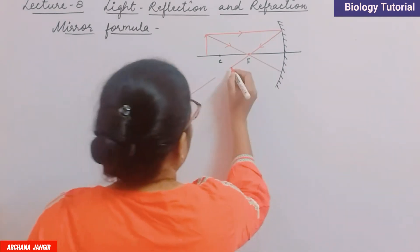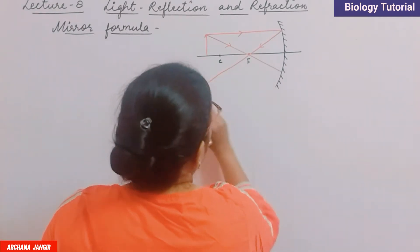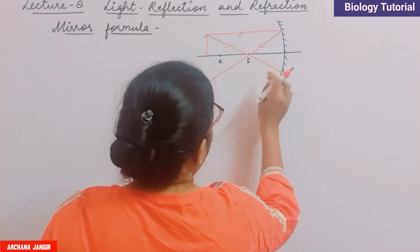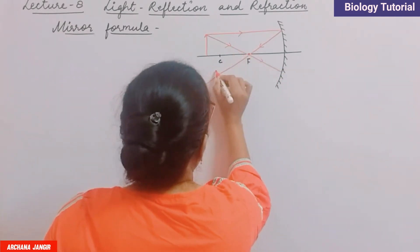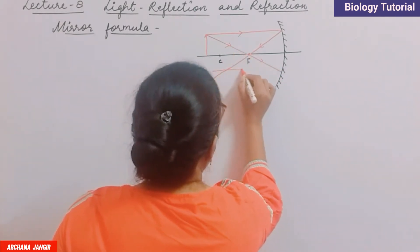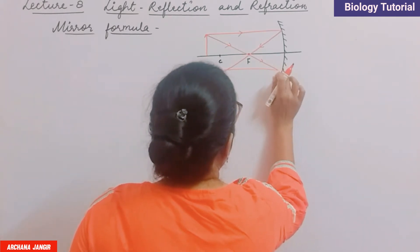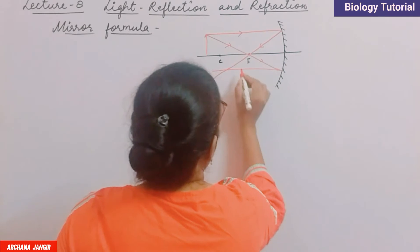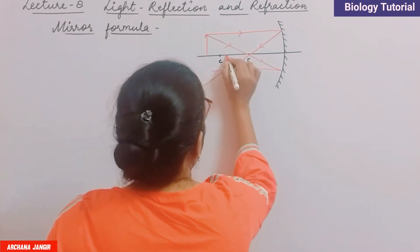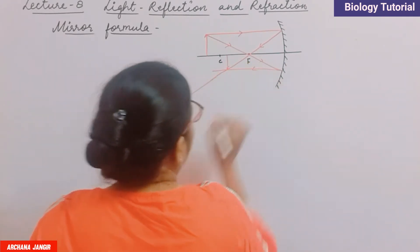This is the ray incident from the focus, and this is the meeting point of the rays. This is the meeting point where the image is formed. Here is the image and this is the reflected ray.